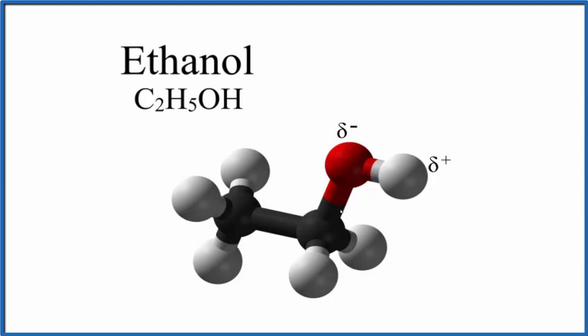So you can imagine you have your ethanol here, and the oxygen, the red, that is very electronegative compared to the other elements around it. So it will be a little bit more negative. This hydrogen, the white, that'll be positive and then the rest of the molecule will be slightly positive as well.